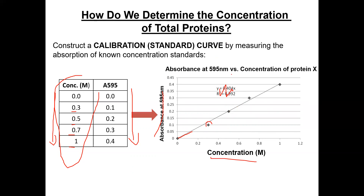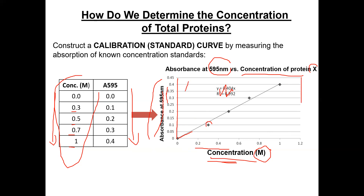When you label this graph, make sure it has a title. The y-axis should show absorbance at whatever wavelength you are using — in this case 595 nanometers — versus the concentration of the protein. The x-axis shows the concentration with its unit; in this example it's molarity, but in the actual experiment it will be a different unit. Importantly, when you draw the axes, the y-axis with the absorbance should be on the left side — in Arabic writing you might place it on the right, but the y-axis belongs on the left.